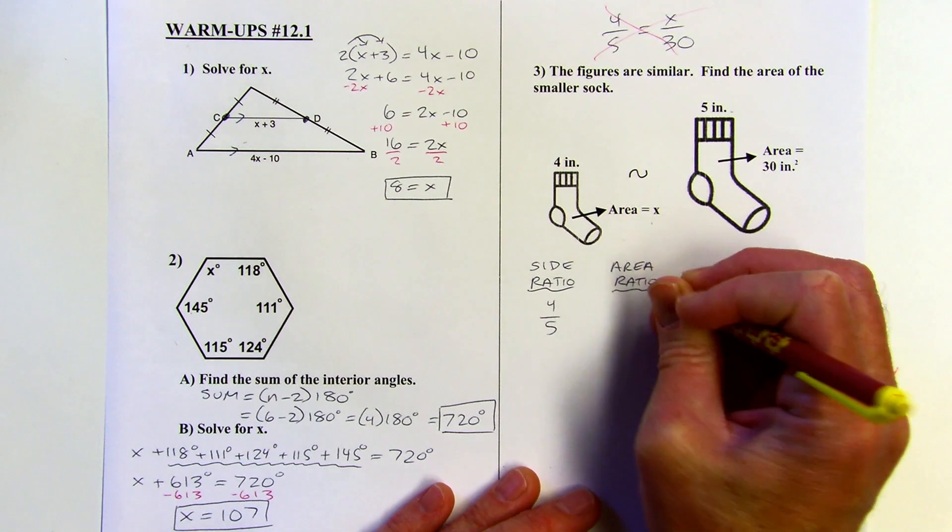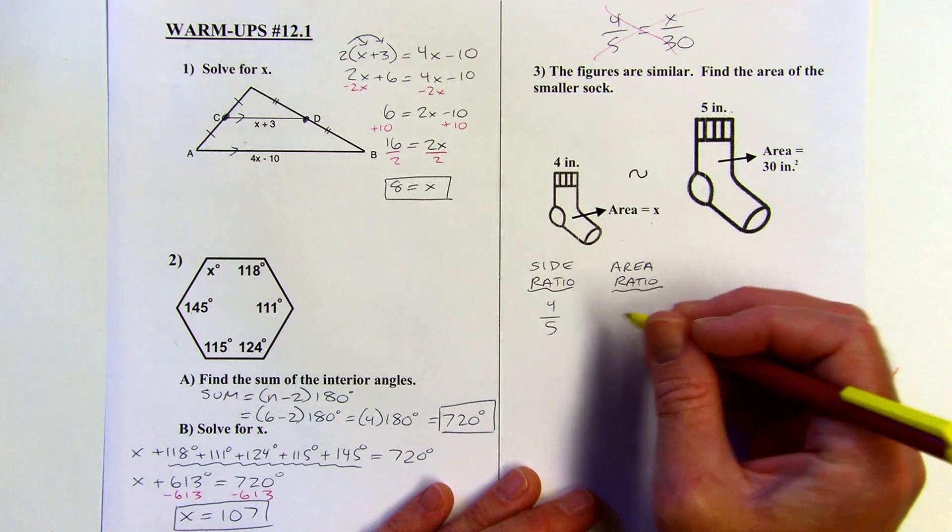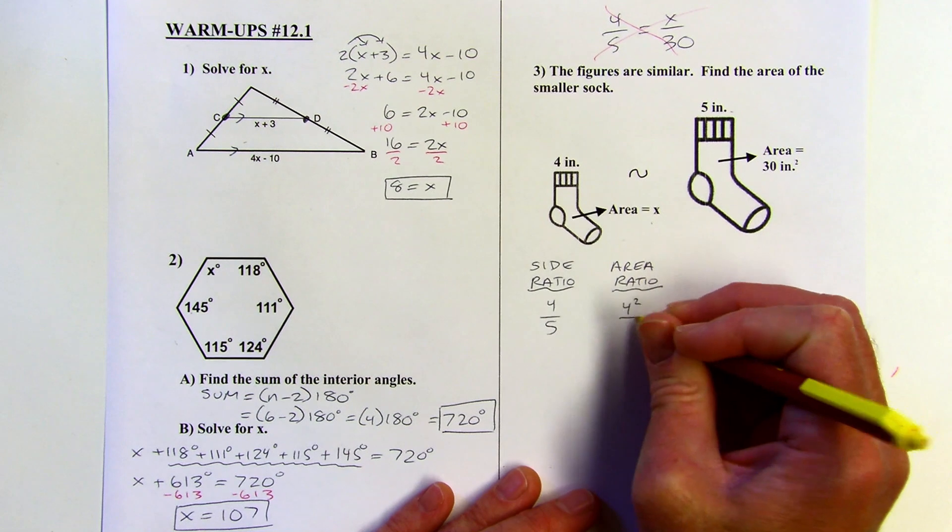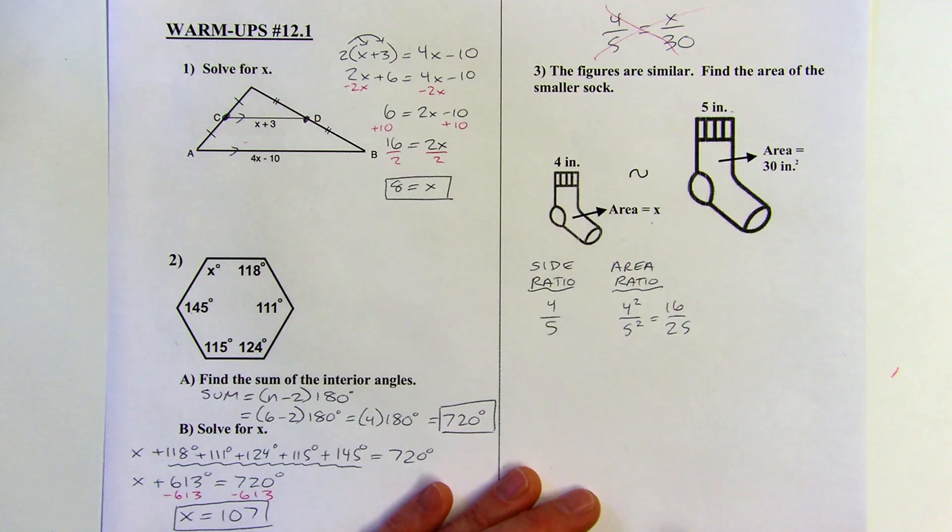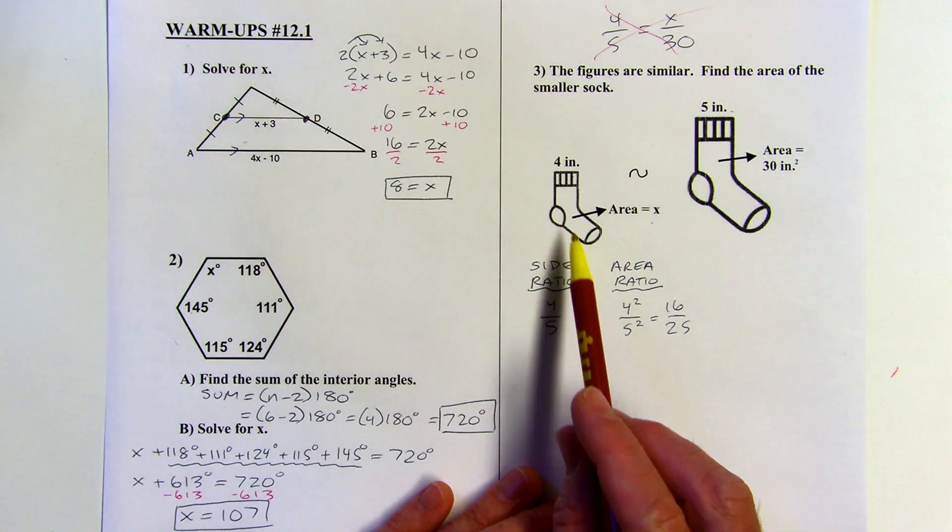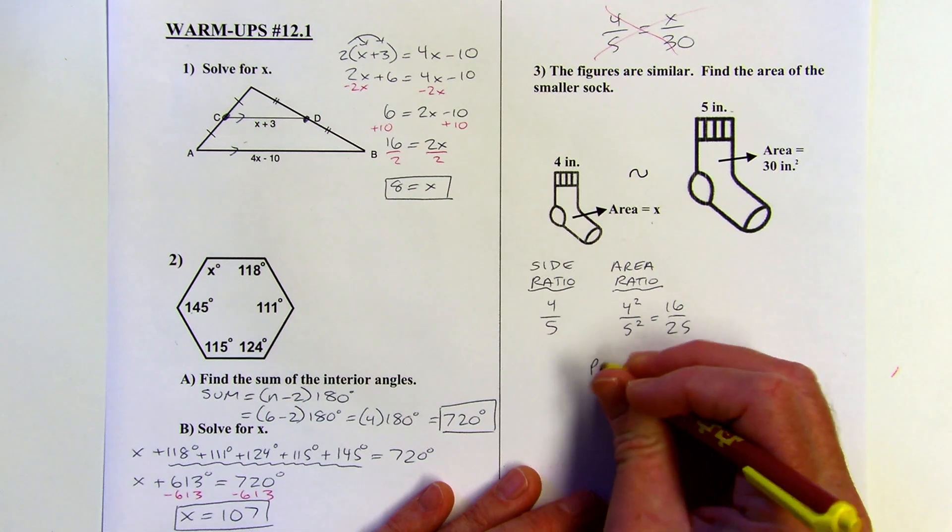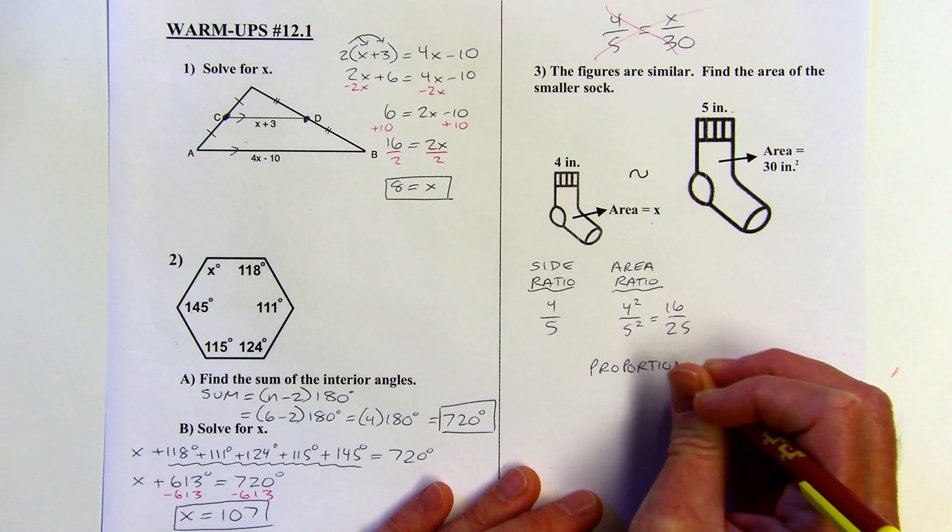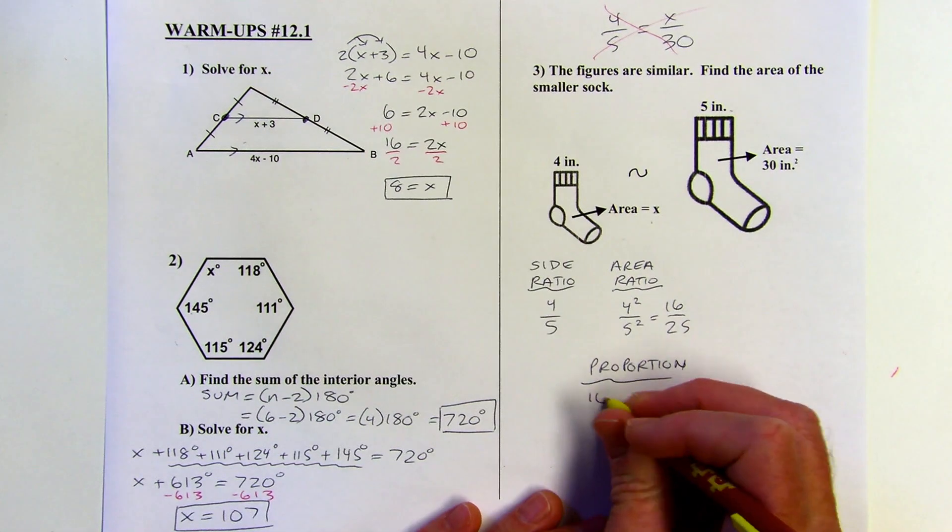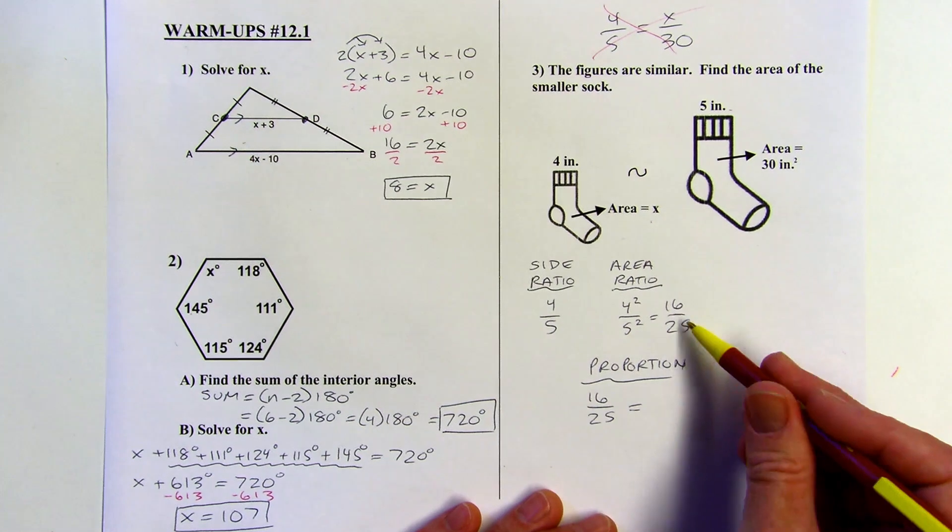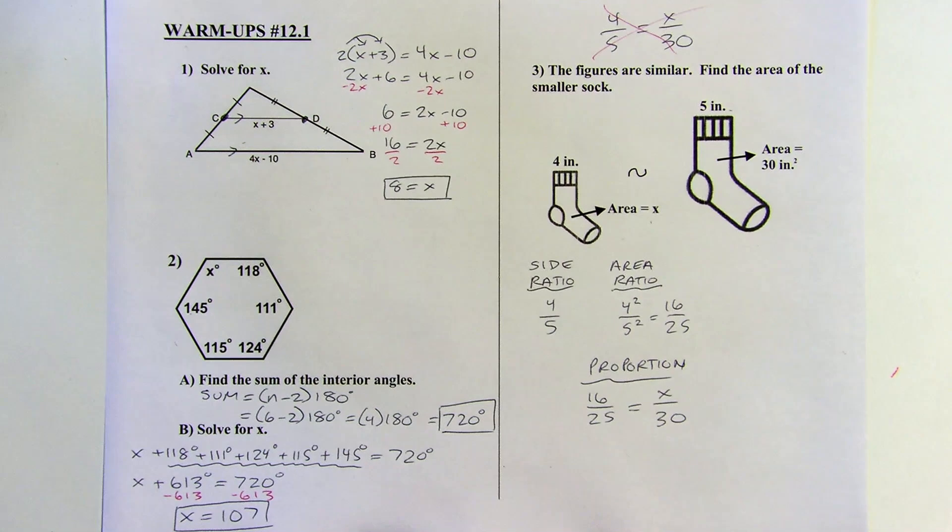So if you know the side ratio of two similar figures, you're going to square that to find the area ratio. So when I square 4 fifths, I'm going to square the top and the bottom, and that will give me 16 over 25. So now I know that these areas should be in a 16 to 25 ratio. So now I can set up my proportion. So I'm not going to do 4 is to 5 as X is to 30. I'm going to actually do 16 is to 25. That's the area ratio as my small area is to my big area, X is to 30. So that's my setup.